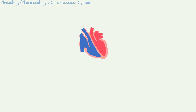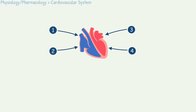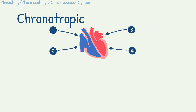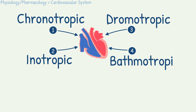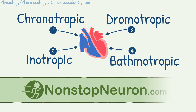Hello, in this video we will talk about 4 types of effects of external stimuli on heart: Chronotropic, Inotropic, Dromotropic, and Bathomotropic. Welcome back to nonstopneuron.com where learning medical concepts is as easy as watching cartoons. Let's get started.